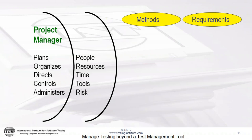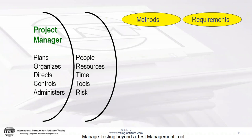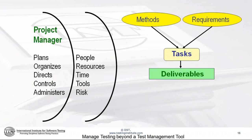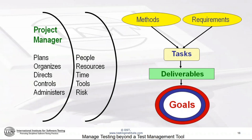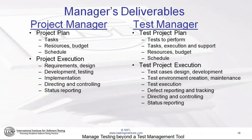When we look at how projects work, project managers plan, organize, direct, control, and administer people, resources, time, tools, and risk to bring together a set of methods with a set of requirements into a set of tasks that when completed produce a set of deliverables that in turn end up satisfying the goals. The secret to effective project management is to go backwards: start with the goals, identify the deliverables that will achieve those goals, then identify the tasks that will bring those methods and requirements together to produce those deliverables.